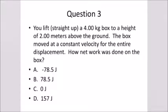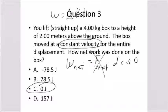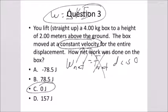Here's question three. You lift the same four kilogram box to a height of two meters at constant velocity. How much net work was done on the box? Since there's no net force, there can be no net work. The net work equals the net force times distance times cosine of theta, and the net force is zero. We also know that work equals change in kinetic energy. Since there's constant velocity, the kinetic energy change is zero, therefore the net work done is zero.